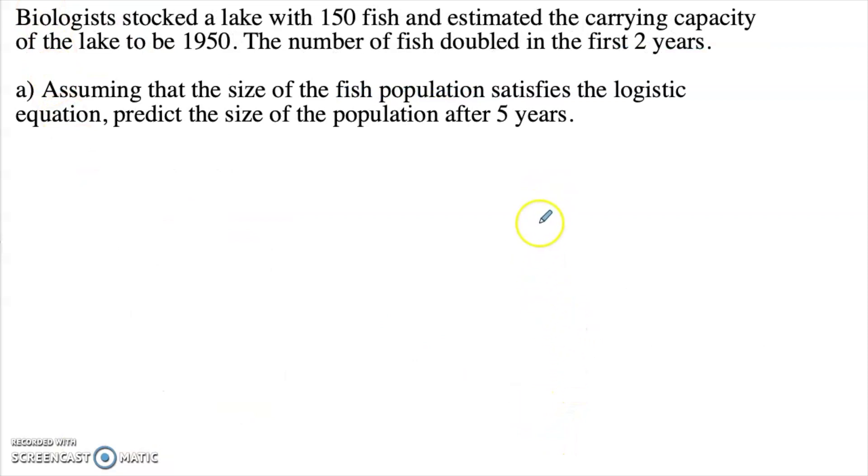Let's look at another example here. Say biologists stock a lake with 150 fish and a carrying capacity estimated at 1950. So the first thing we're going to want to do is calculate that value for a. So a is going to be 1950, our carrying capacity, minus that 150 fish, the initial population. And then that's going to be over the initial population again. So that same 150. Plugging out in the calculator, we're going to get an a of 12 for this one.